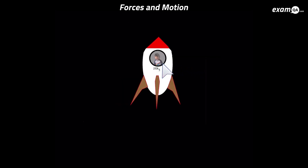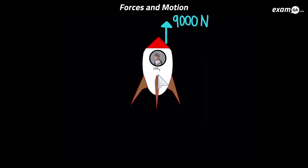Here's our first guest — my older son in a rocket, still on Earth so it still has weight. The engine produces a force of 9000 newtons upwards. The mass is 200 kilograms, so the weight is m times g, which is 200g, acting downwards. Let's work out the acceleration.